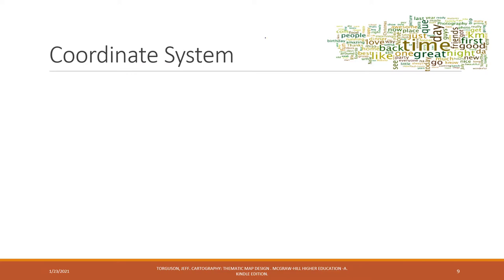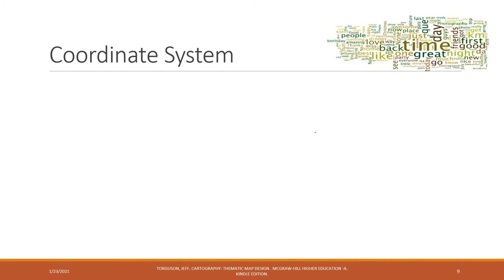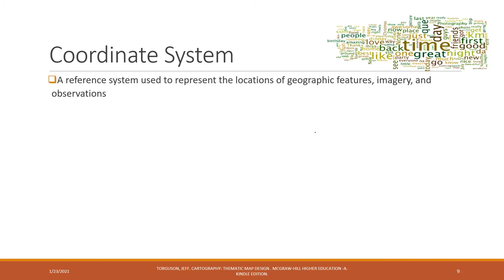We have a coordinate system because when we have different datasets talking about the same place — for example, Virginia — and we bring those datasets together to create maps, we want to make sure that Virginia in one dataset matches Virginia in another. So the coordinate system is a reference system used to represent the locations of geographic features, ensuring that geographic datasets use common locations.